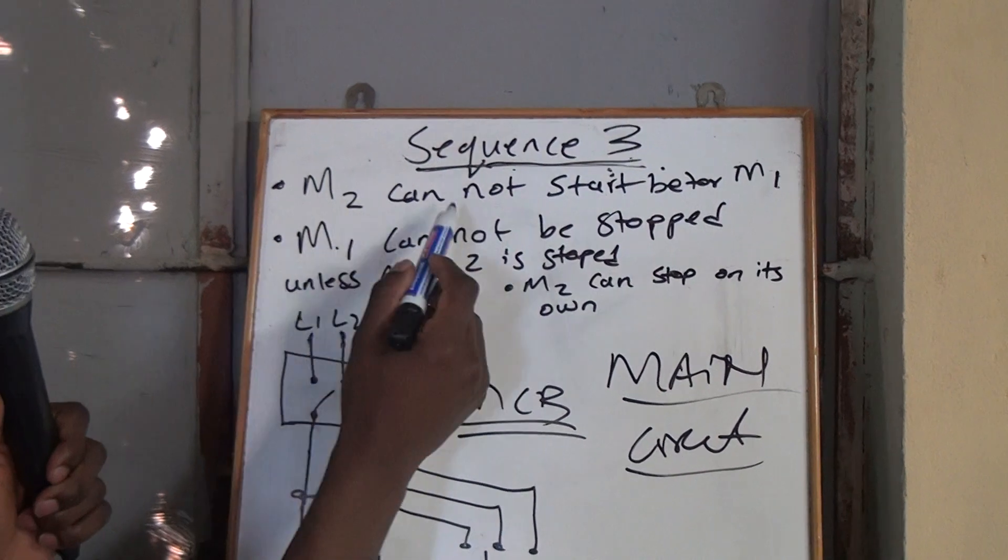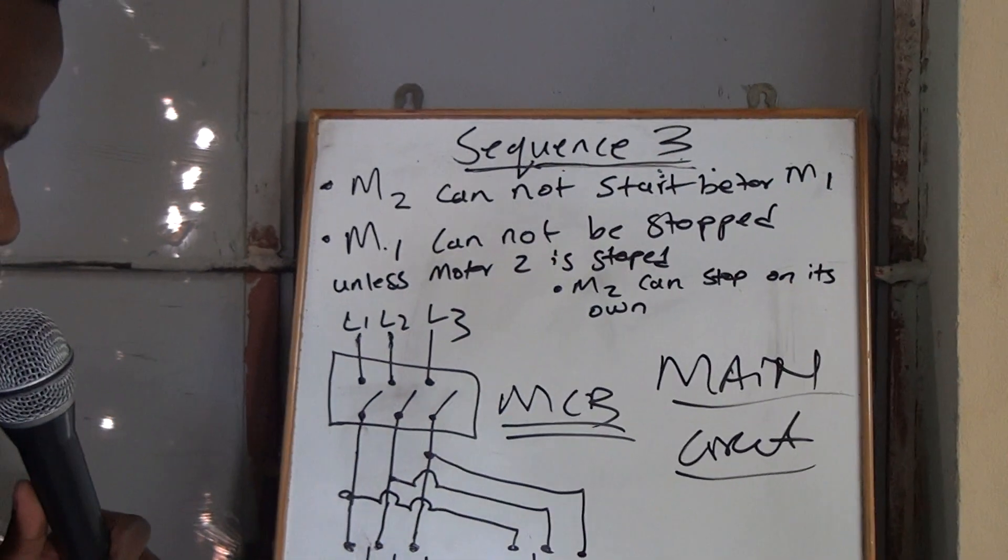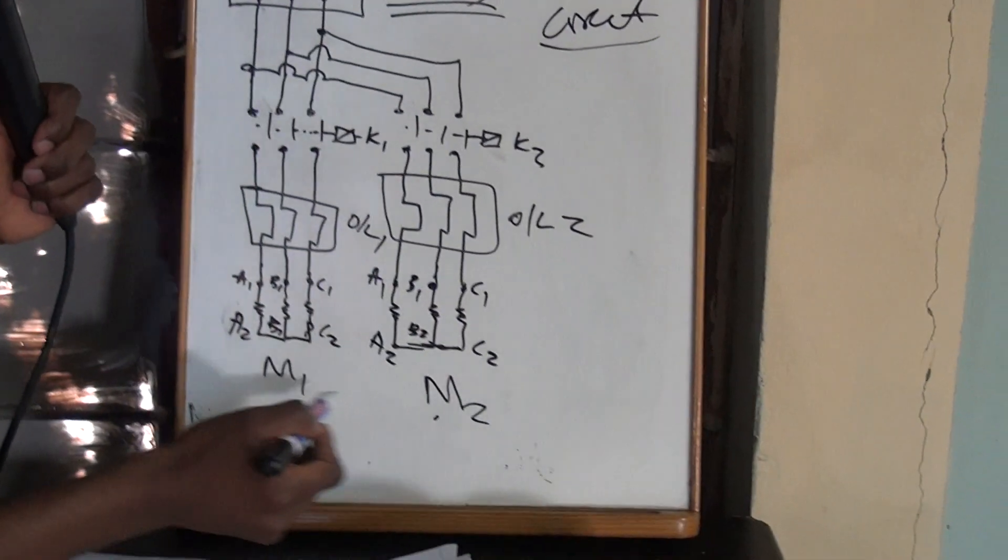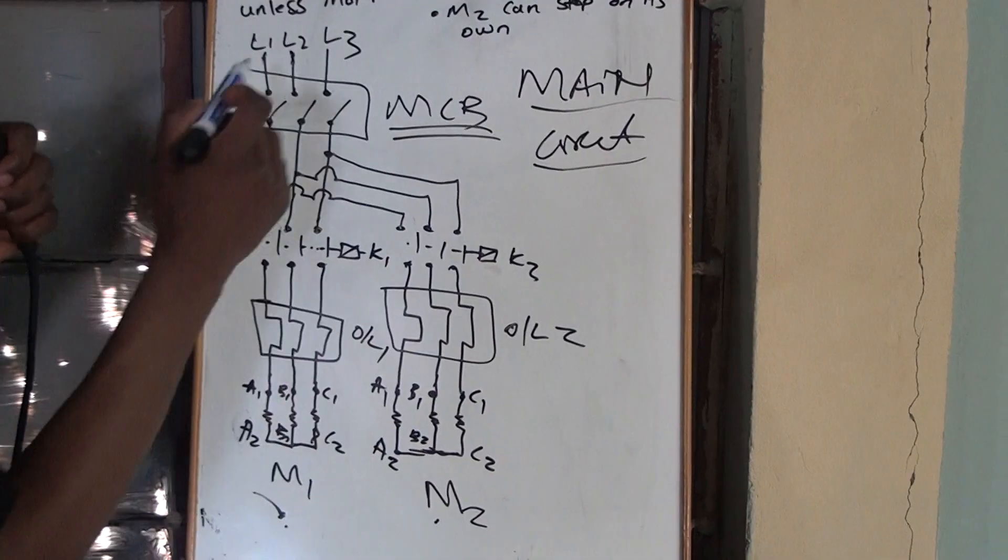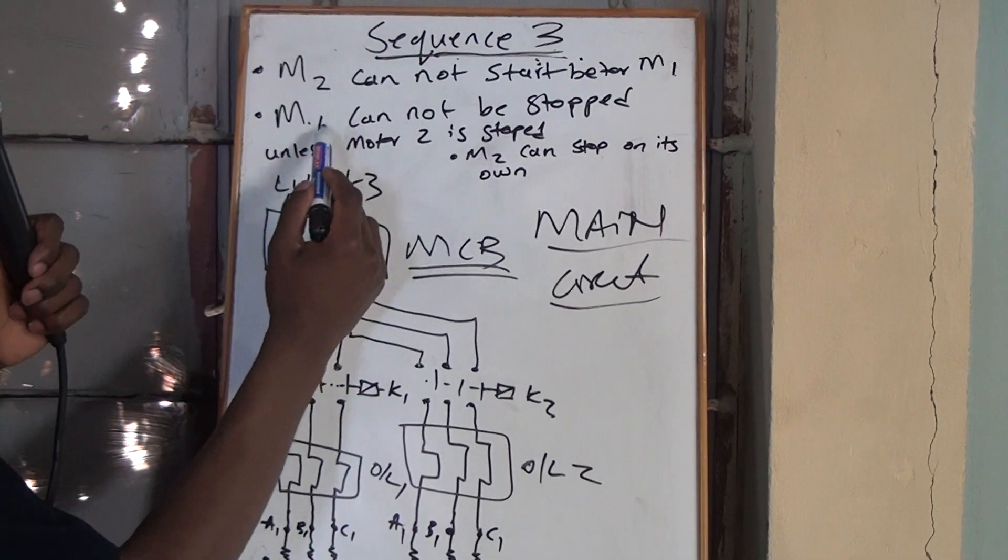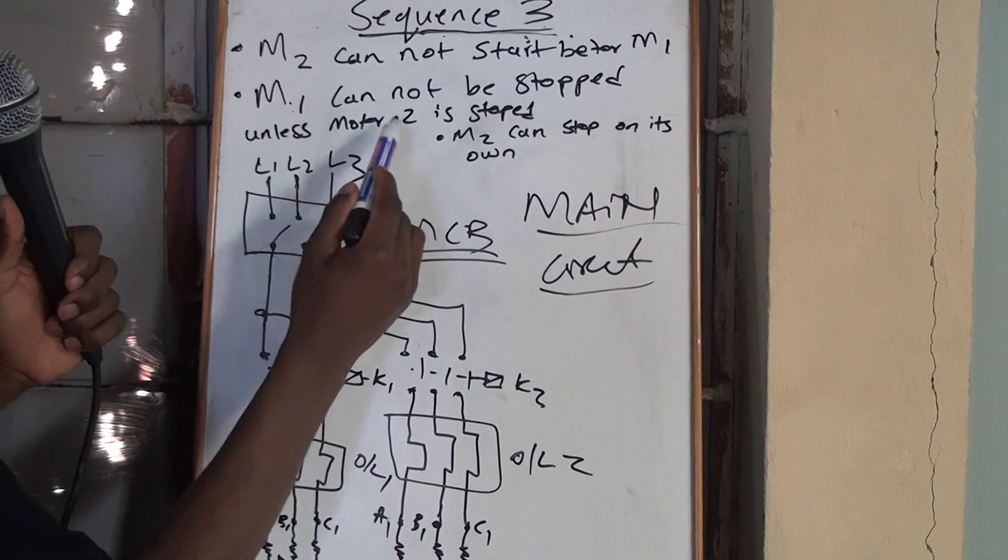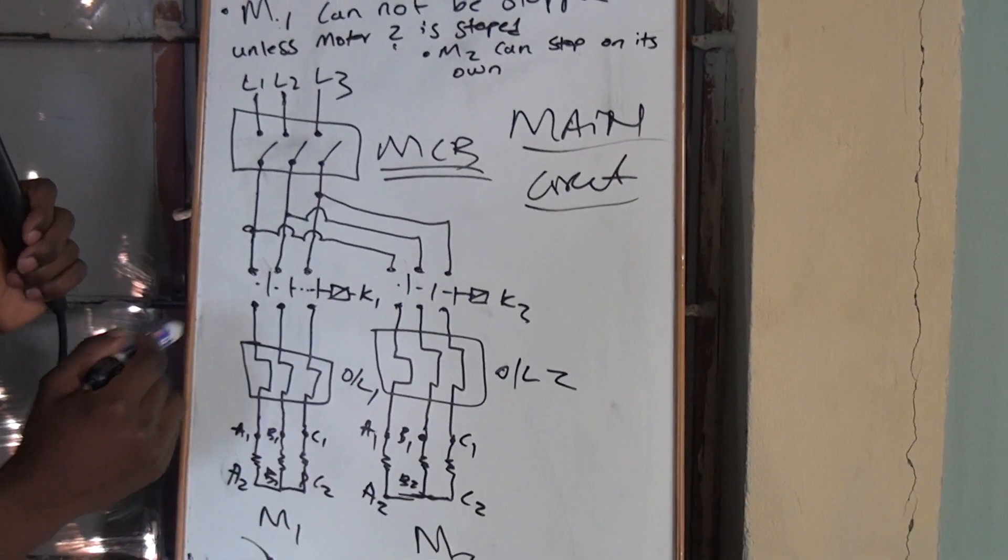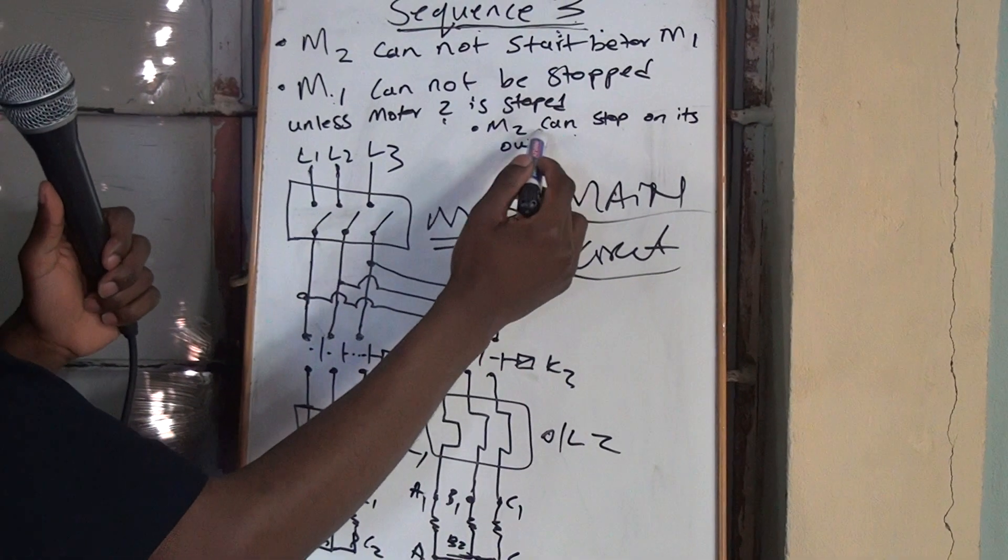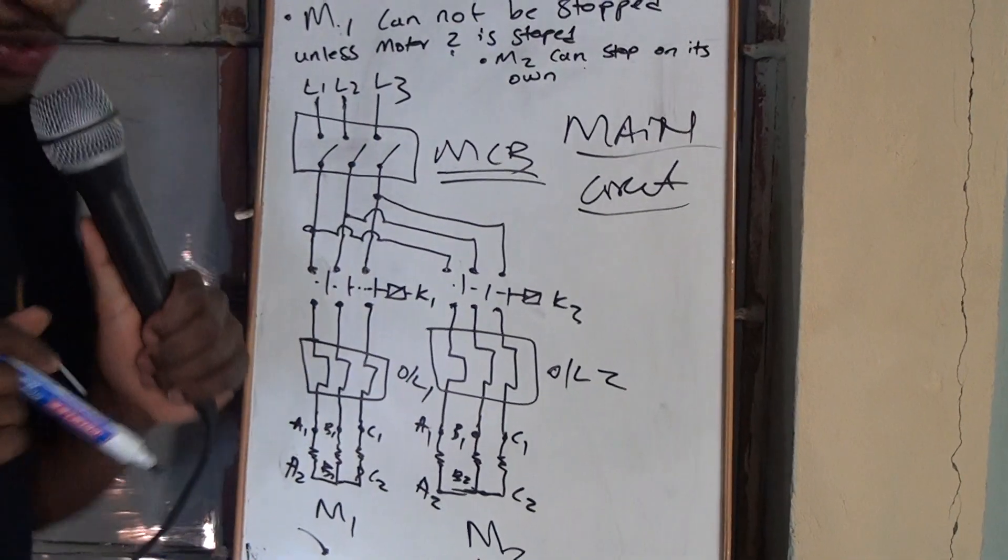It's saying that Motor 2 cannot start before Motor 1. So your Motor 2 cannot start unless you start this Motor 1. Then the second statement says that Motor 1 cannot be stopped unless Motor 2 is stopped. And Motor 2 can stop on its own. So this is what is happening.